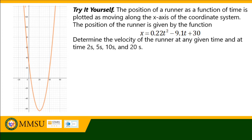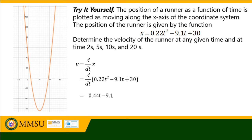For the try-it-yourself part of the module, the position of a runner as a function of time is plotted along the x-axis. The position function is: x = 0.22t² minus 9.1t plus 30. We need to determine the velocity of the runner at any given time, and at specific times: 2 seconds, 5 seconds, 10 seconds, and 20 seconds. Similar to the previous example, we compute the instantaneous velocity by taking the derivative of position with respect to time.